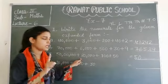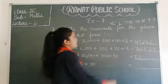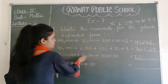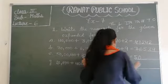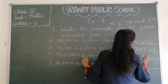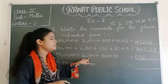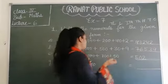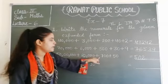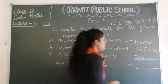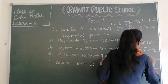Agar koi digit missing hogi, thik hai, toh usme hum zero use karenge. Then uske baad one lakh ki baad ten thousand wali digit ati hai. Toh ten thousand me twenty thousand hai. Twenty thousand, ten thousand wali digit me hi place value me hi ati hai. Toh hum yaha pe iska two likhenge. Tab hum koi zero ka use nahi karenge.